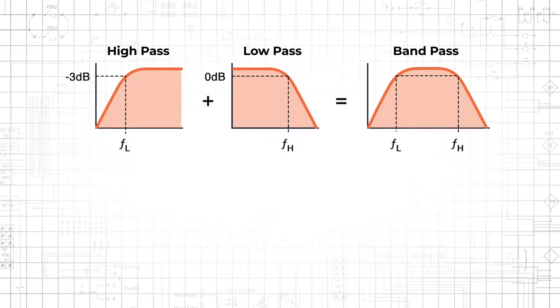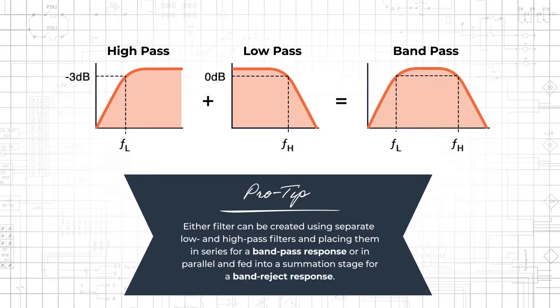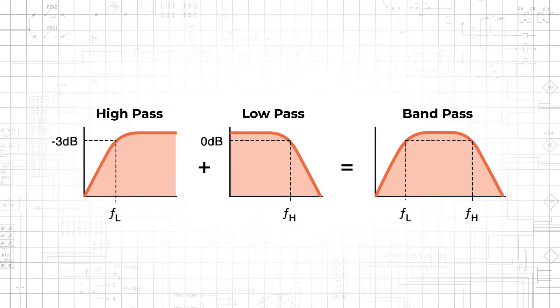Either filter can be created using separate low and high pass filters and placing them in series for a bandpass response or in parallel and fed into a summation stage for a band-reject response, with the cutoff frequency of each stage adjusted to create the pass band or notch.